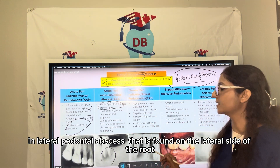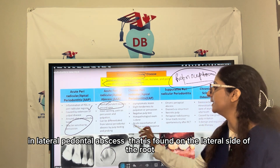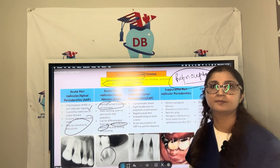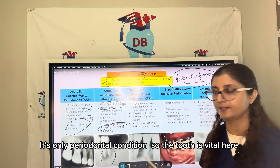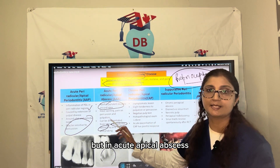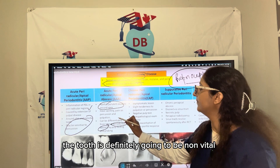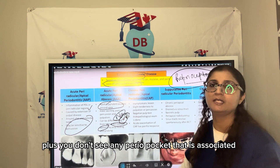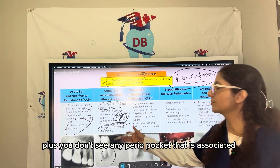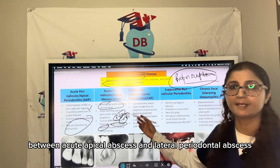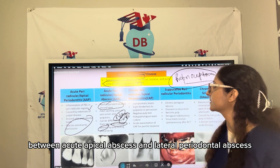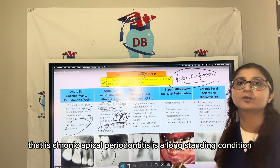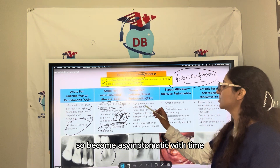To differentiate acute apical abscess from a lateral periodontal abscess: a lateral periodontal abscess is found on the lateral side of the root, is always associated with a periodontal pocket, and the tooth is vital. In acute apical abscess, the tooth is non-vital and there is no associated periodontal pocket.